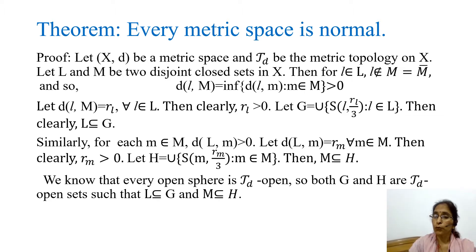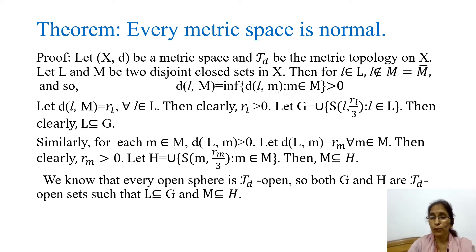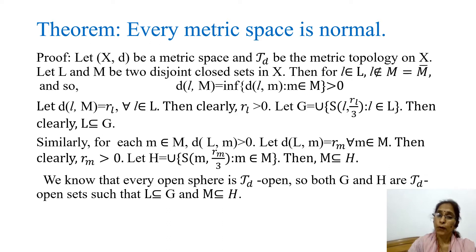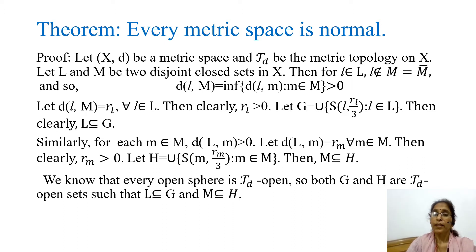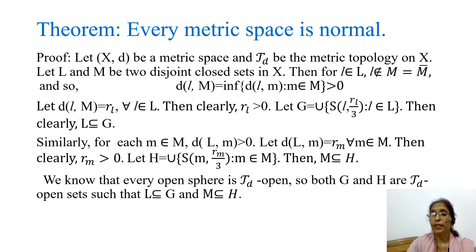To show normality, we need two disjoint closed sets. Let L and M be two disjoint closed sets in X. Then for any small l belonging to L, l does not belong to M since L and M are disjoint. Since M is closed, M equals the closure of M. That means l is neither a point of M nor a limit point of M. The distance of set M from l is defined as the infimum of d(l, m) where m belongs to M. Since there is no sequence in M converging to l, this distance is always positive.